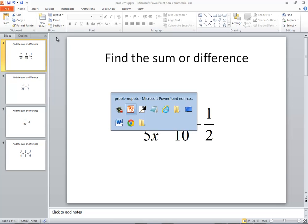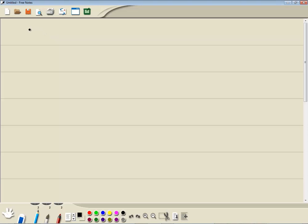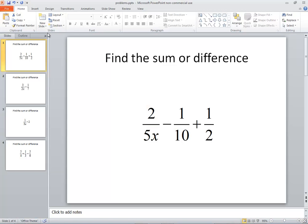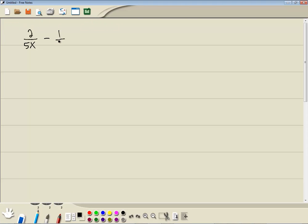Let's take a look at this problem. We got 2 over 5x minus 1 tenth plus 1 half.